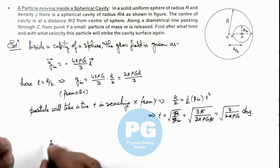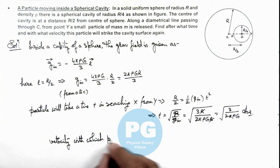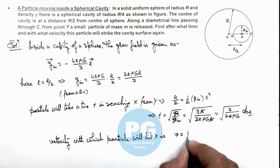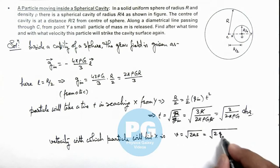And we can also calculate the velocity with which particle will hit x. This speed we can write as root 2as. So here it'll be given as root of twice of acceleration, g inside, and the distance is R/2.